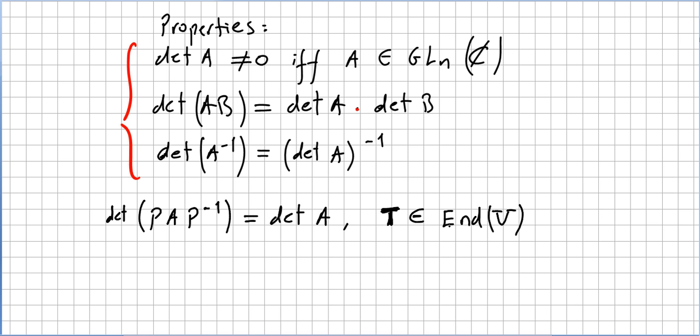We choose a basis for V, so the vector space, we choose a basis, I'm using this notation, use a basis for B, and we can compute the determinant of the corresponding matrix of T. So there will be, this transformation will be given by a matrix, and we can get the determinant of that matrix.